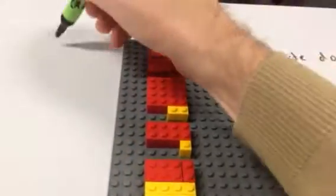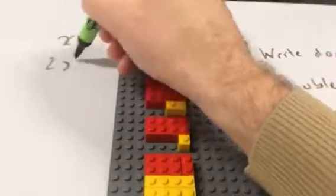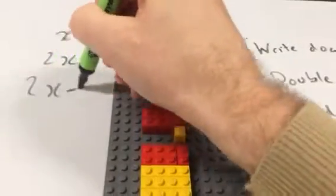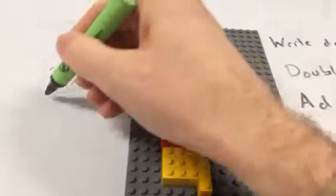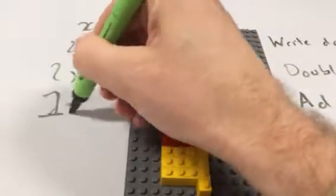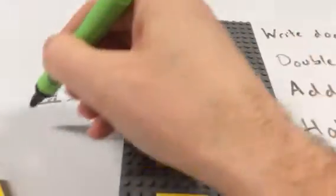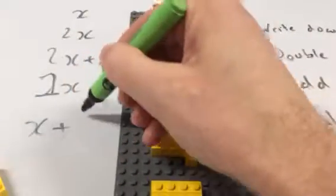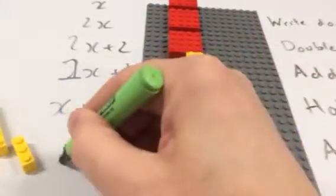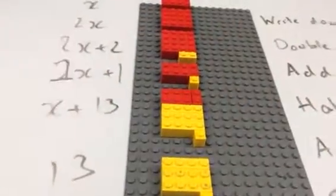So if I was to just do the algebra quickly, as you said, if we had an x, then we have 2x, 2x plus 2, 1x plus 1, x plus 13, and then you're just left with 13. And there we are, using Lego to demonstrate some algebra and expressions.